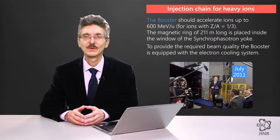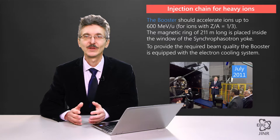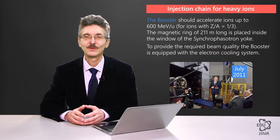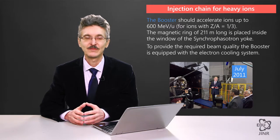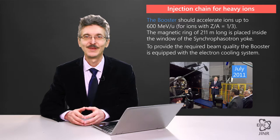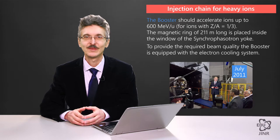The booster will be a superconducting accelerator with accompanying magnets being produced in our lab. To provide high-quality beams, this synchrotron will use an electronic cooling system. Due to this, historical justice will finally prevail: the method of electronic cooling, invented in the Soviet Union and nowadays used in almost every country, will be applied in the Russian Federation. The booster itself will be located inside the magnet yoke of the synchrophasotron, which will both preserve the synchrophasotron as a historical exhibit and use its iron yoke as biological protection for the booster elements.